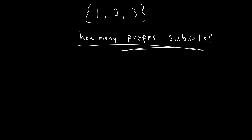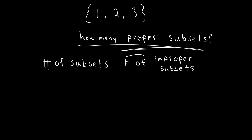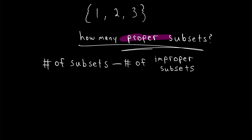In order to answer this question, all we really need to do is find the total number of subsets that any set has. We also want to know the number of improper subsets any set has. Then if we subtract the number of improper subsets from the total number of subsets, all that will remain is the number of proper subsets.